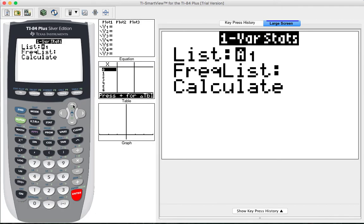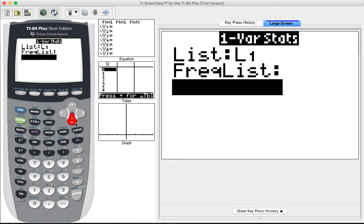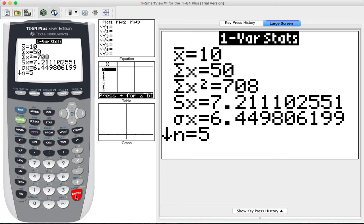On this screen you're going to identify the list where your data is stored, and mine is in L1, so I'll leave that as the default list L1. Frequency list I'm going to leave blank. Calculate will generate the answers, so let's scroll down to calculate and hit enter.